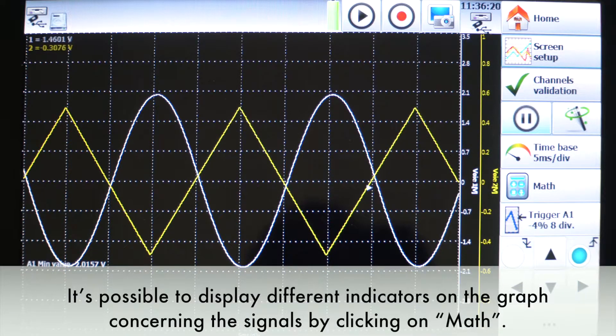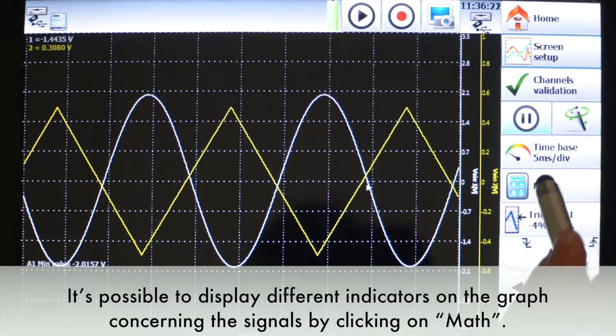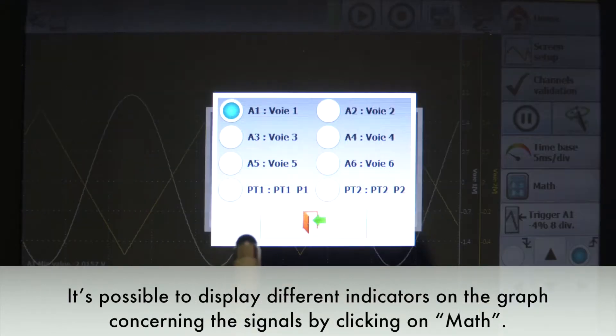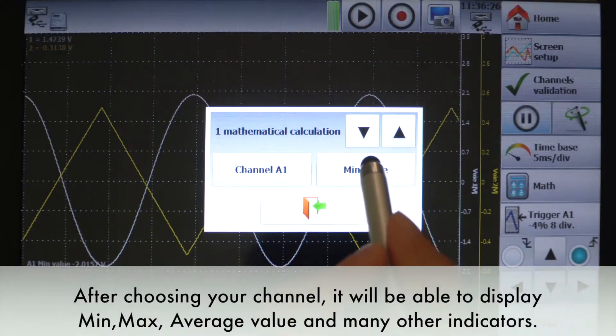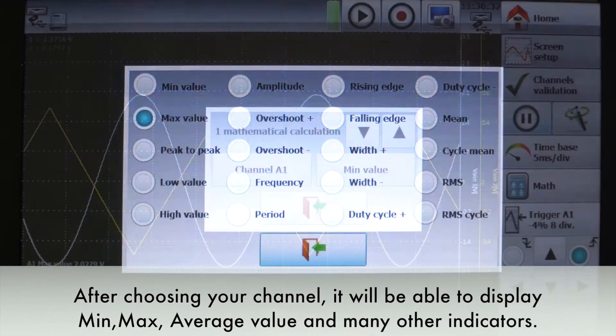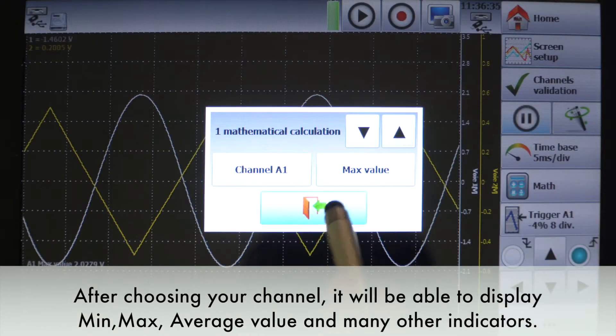It's possible to display different indicators on the graph concerning the signals by clicking on math. After choosing your channel, it will be able to display min, max, average value, and many other indicators.